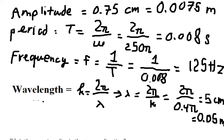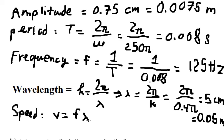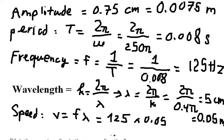The last one is the speed of propagation. The formula is V equals F multiplied by lambda. F is 125 Hertz, and lambda is 0.05 meters. Calculating this, we get 6.25 meters per second.